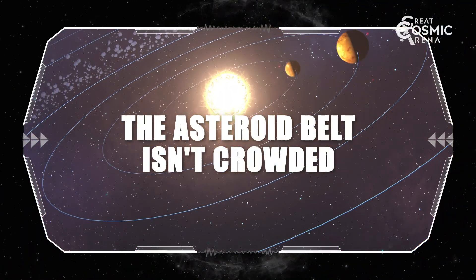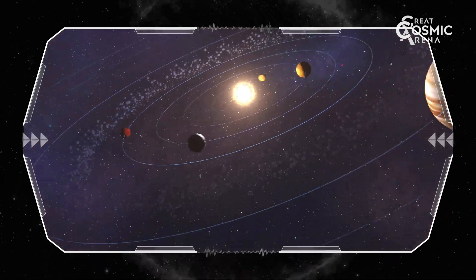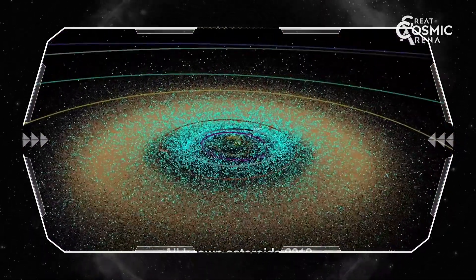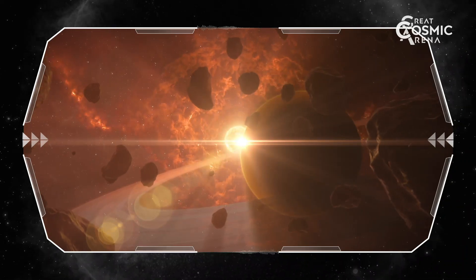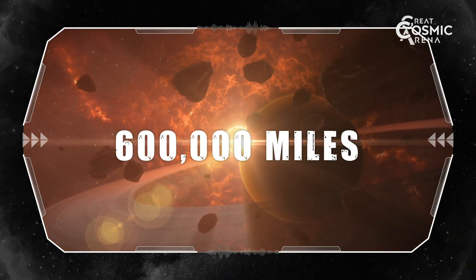The asteroid belt isn't crowded. Sci-fi often shows spaceships dodging dense asteroid clusters. In reality, the average distance between asteroids in the belt is a whopping 600,000 miles.